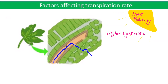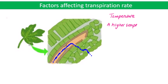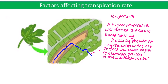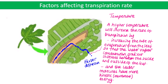Higher light intensity increases transpiration rate because there are more stomata open for photosynthesis. A higher temperature will increase the rate of transpiration, increasing the rate of evaporation from the leaf so that the water vapor concentration gradient increases between the inside and outside of the leaf, and the water molecules will have more kinetic energy so will be moving more quickly, leading to faster diffusion.